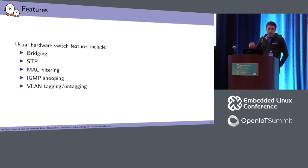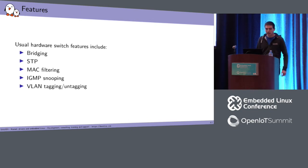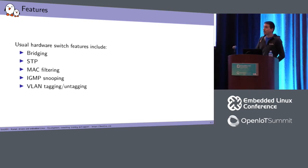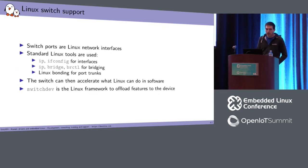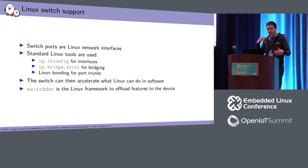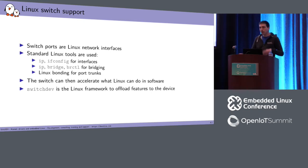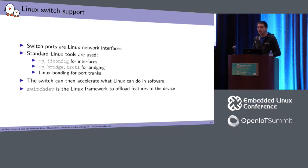A switch usually includes features like bridging/switching, STP, MAC filtering, IGMP snooping, and VLAN tagging/untagging — though not all switches support all of these. Instead of using that SDK or vendor-specific tools, we want to use standard Linux tools: IP, ifconfig for interfaces, IP bridge, BRCTL for bridging, and Linux bonding for port trunks (link aggregation).